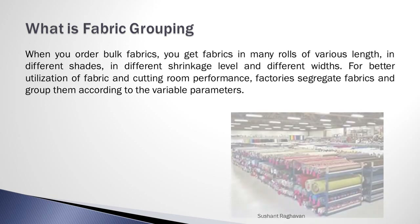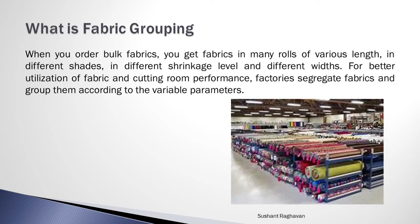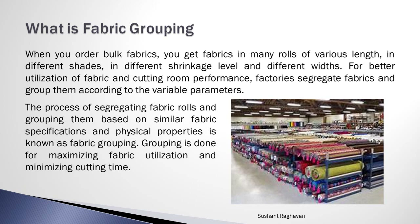When you order bulk fabrics, you get fabrics in many rolls of various lengths, in different shades, in different shrinkage levels, and different widths. For better utilization of fabric and cutting room performance, factories segregate fabrics and group them according to measurable parameters. The process of segregating fabric rolls and grouping them based on similar fabric specifications and physical properties is known as fabric grouping. Grouping is done for maximizing fabric utilization and minimizing cutting time.